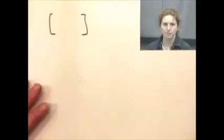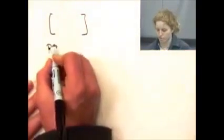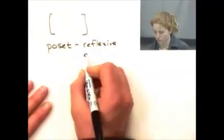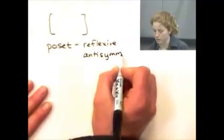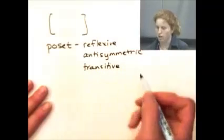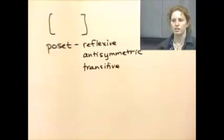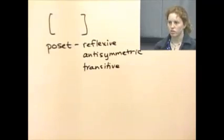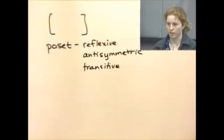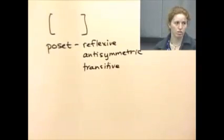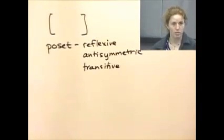A partially ordered set has the properties: reflexive, anti-symmetric, and transitive. If you had trouble with anti-symmetric, remember: in a Hasse diagram everything goes up, meaning nothing on a higher level can relate back down to a lower level. Anti-symmetric just means if I have an arrow going one way, it can't go the other way.